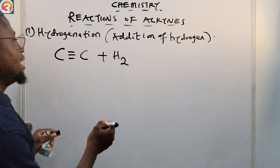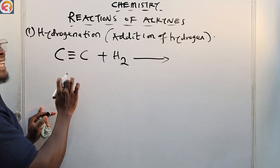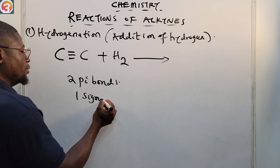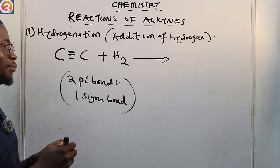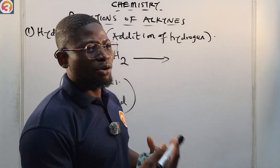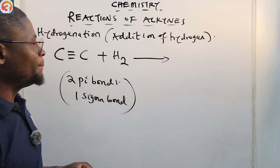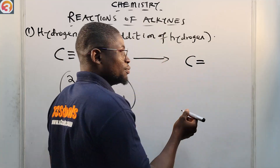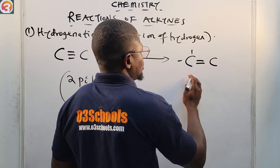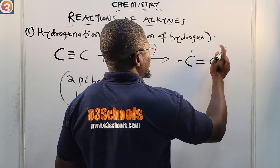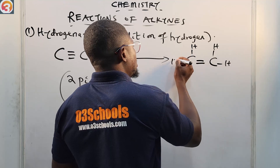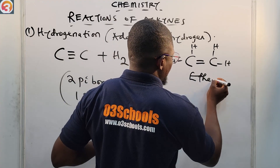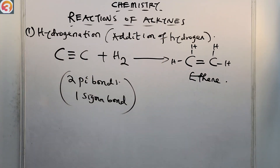So if you have a simple alkyne like ethyne — C triple bond C — it reacts with hydrogen H₂. In this alkyne there are three bonds: two pi bonds and one sigma bond. When it undergoes an addition reaction with hydrogen, one of the pi bonds is broken, leading to the formation of an alkene — ethene, C=C — with the structure completed as H₂C=CH₂.